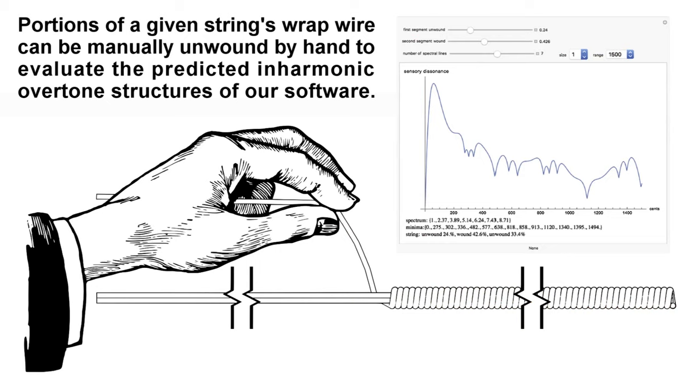Perhaps the easiest way to manufacture non-uniform strings is to exploit the structure of common wound strings, which consist of an inner core and a winding around that core. In order to achieve a non-uniform density distribution, portions of the wrap wire must be manually unwound by hand.